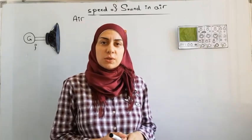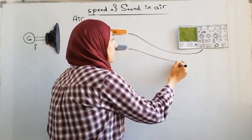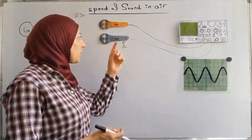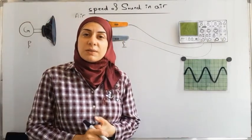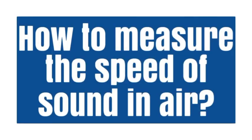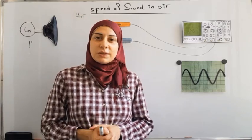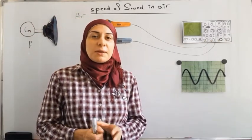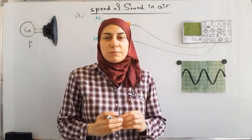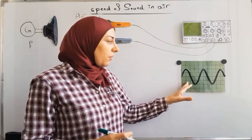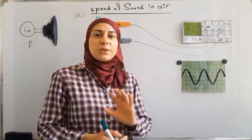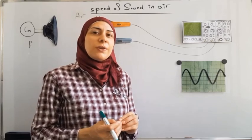We want to measure and study these two electric signals produced by the two microphones, so we connect the two microphones to the two channels of the oscilloscope. We observe that the two signals are confounded. Why is that? Because the two microphones are at the same distance from the loudspeaker, they capture the sound wave at the same instant, so the two waveforms are confounded — they are above each other and also in phase, meaning they reach the highest and lowest points at the same instant.